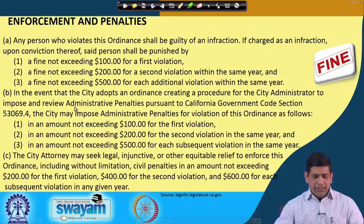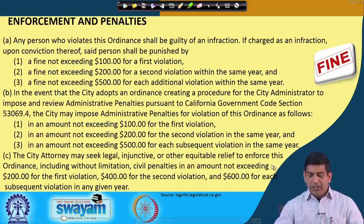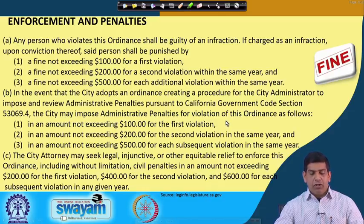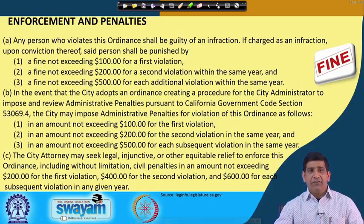The penalties are also there. The city may impose administrative penalties for violation: 100, 200, and 500 dollars. The city attorney may also seek legal action or other equitable relief, including civil penalties of 200 dollars for the first violation, 400 for the second, and 600 for each subsequent violation in a given year. That is a hefty fine — 500 dollars can buy you a decent laptop, which is somewhere between 35,000 to 40,000 Indian rupees. That is a lot of money. If it is enforced, people will follow it — but of course, the options have to be there.